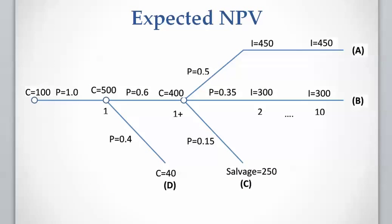A decision tree is a very helpful graph that separates the possible cases. Starting from the left-hand side, we have the initial lease investment at present time — we write the cost or income and in front of that the probability, which is 100% since it applies to all cases. At year one we spend $500,000 for drilling, then two branches deviate: 60% success and 40% failure.